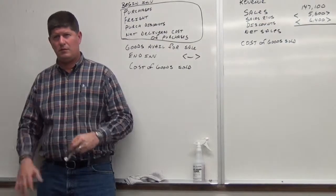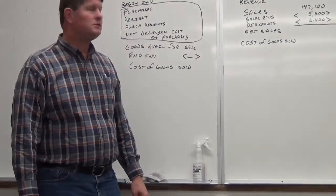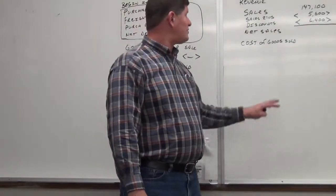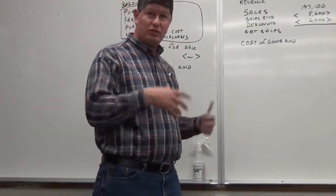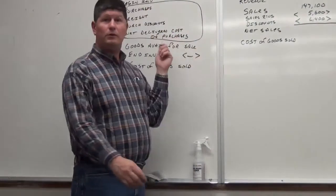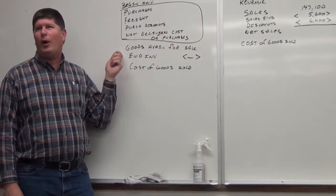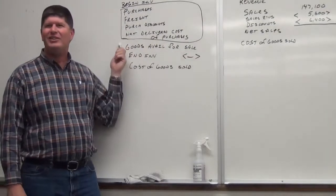Hang on. I need to correct my language here on you guys. There we go. So, we have beginning inventory. We have purchases. Plus the freight in. Less the discounts. Gives you net delivered cost of purchases. So, that's this whole section here. And if you add beginning inventory to net delivered cost of purchases, you get goods available for sale.